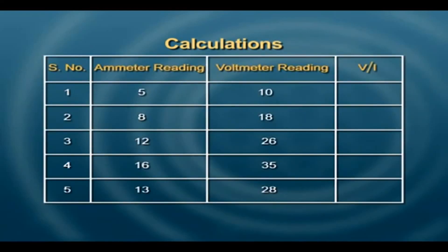We can calculate a value for resistance by dividing the voltmeter divisions by the ammeter. And approximately if you see, just by looking at the readings, this value comes out to be almost the same.